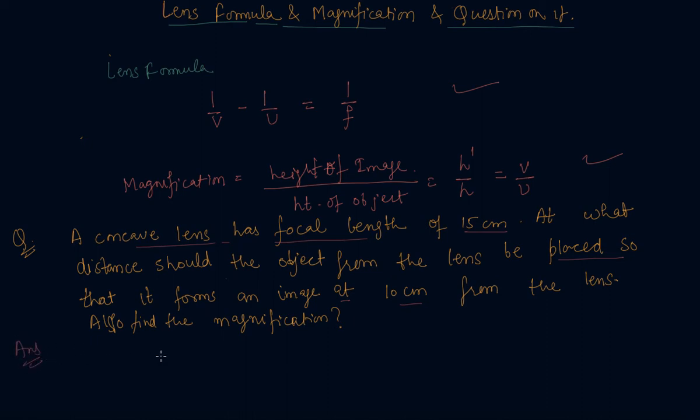Now we will use the sign convention of the spherical mirror same as it is here. The image formation V is at minus 10 centimeter. It is on the left hand side. So it is minus 10 and the U is also negative here. The focal length is also negative. By using the formula 1 by V minus 1 by U equal 1 by F, so minus 1 by 10 minus 1 by U equal minus 1 by 15.